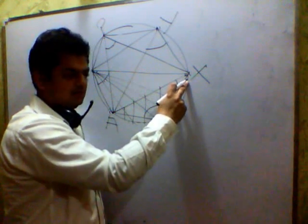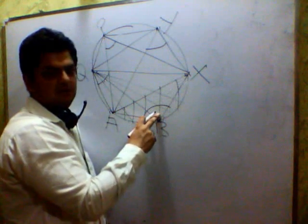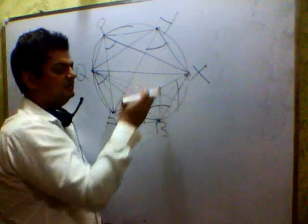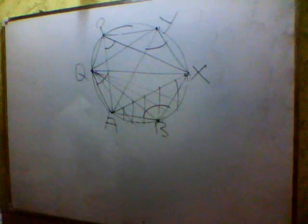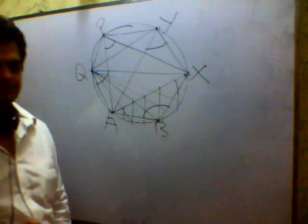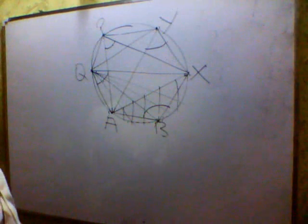But in this point as well, we cannot consider this angle as equal to this angle because these angles and these three angles are lying in different segments. And we have understood that angles in the same segments are equal. Am I right?